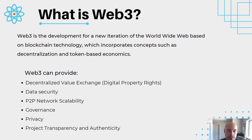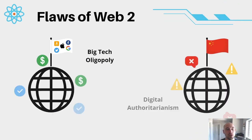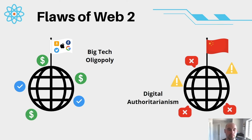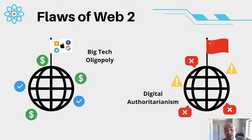Web 3.0 can provide decentralized value exchange, digital property rights, data security, peer-to-peer network scalability, governance, privacy, and project transparency and authenticity. The flaws of Web 2.0 include big tech oligopolies — centralized servers that control and dominate data streams, censor content, and get the majority of value by selling user data to third parties for marketing revenue. Digital authoritarianism can come from either big tech or governments that want to block access, build walled gardens, and track users — a very scary dystopian reality that is already here.